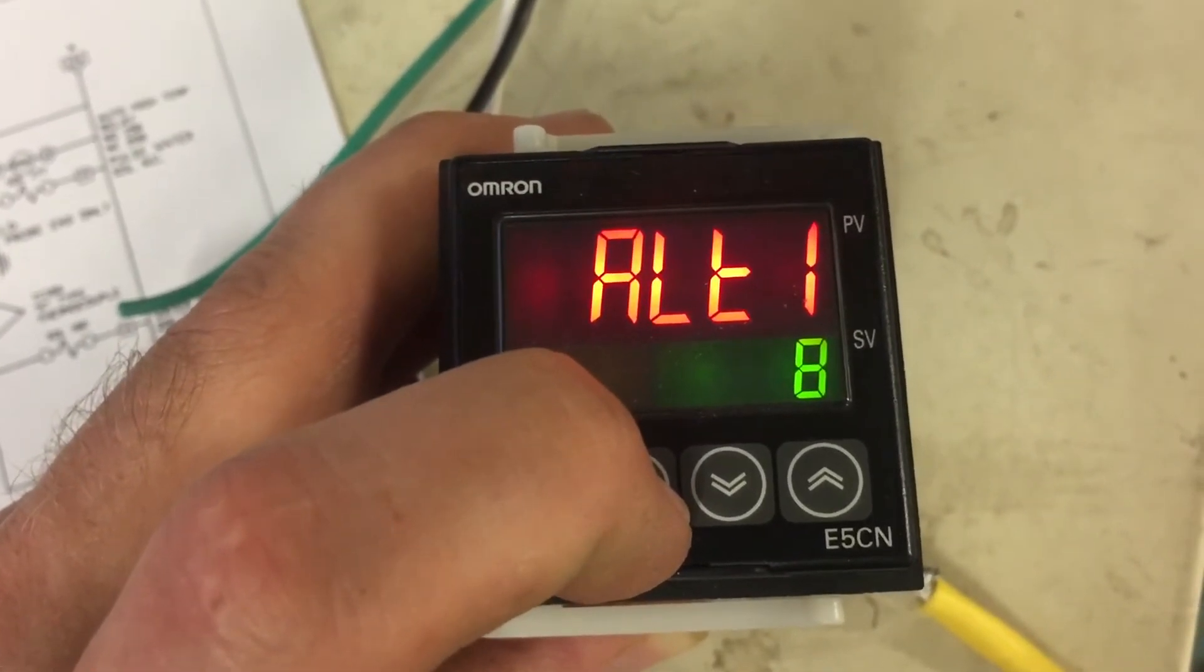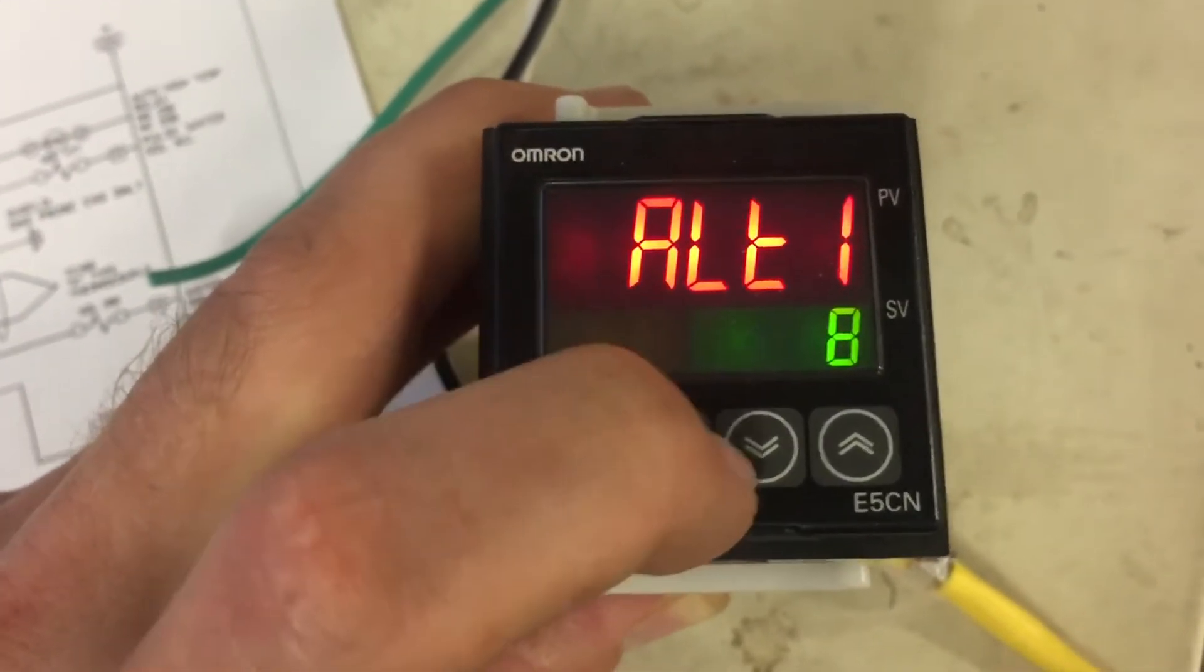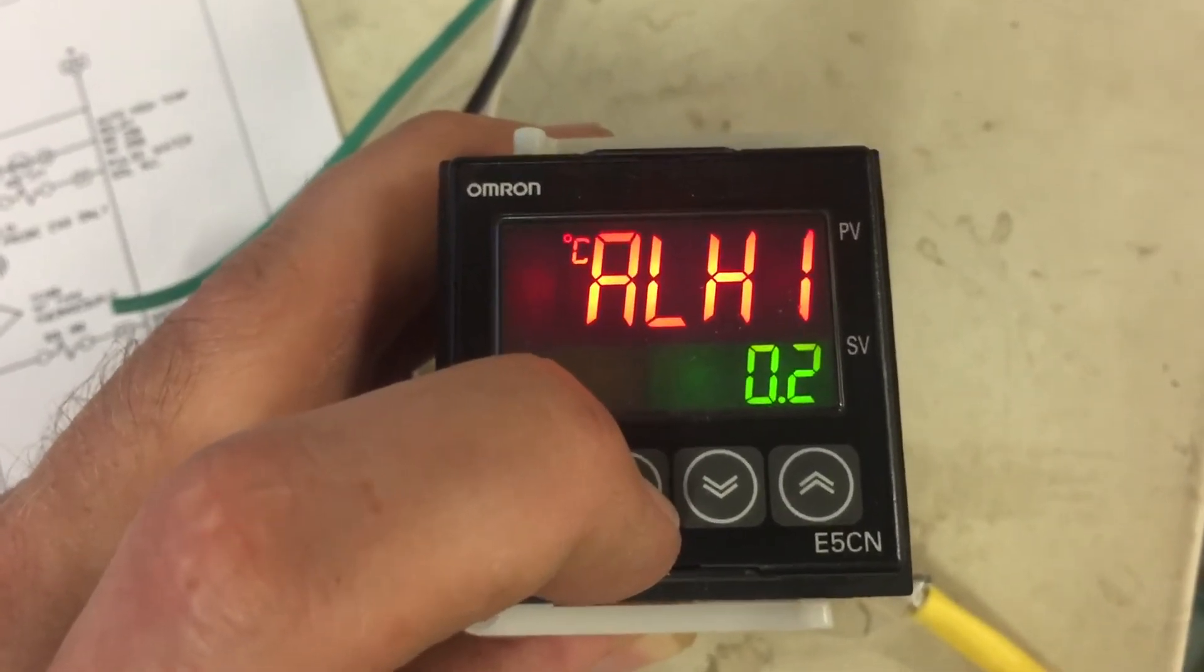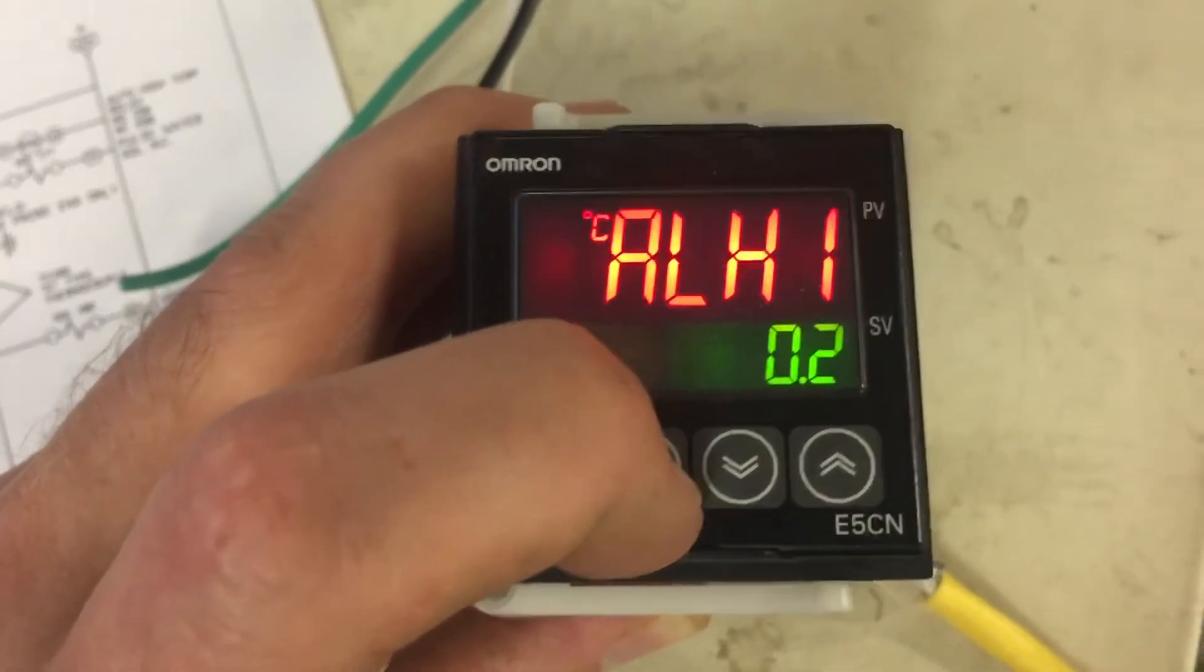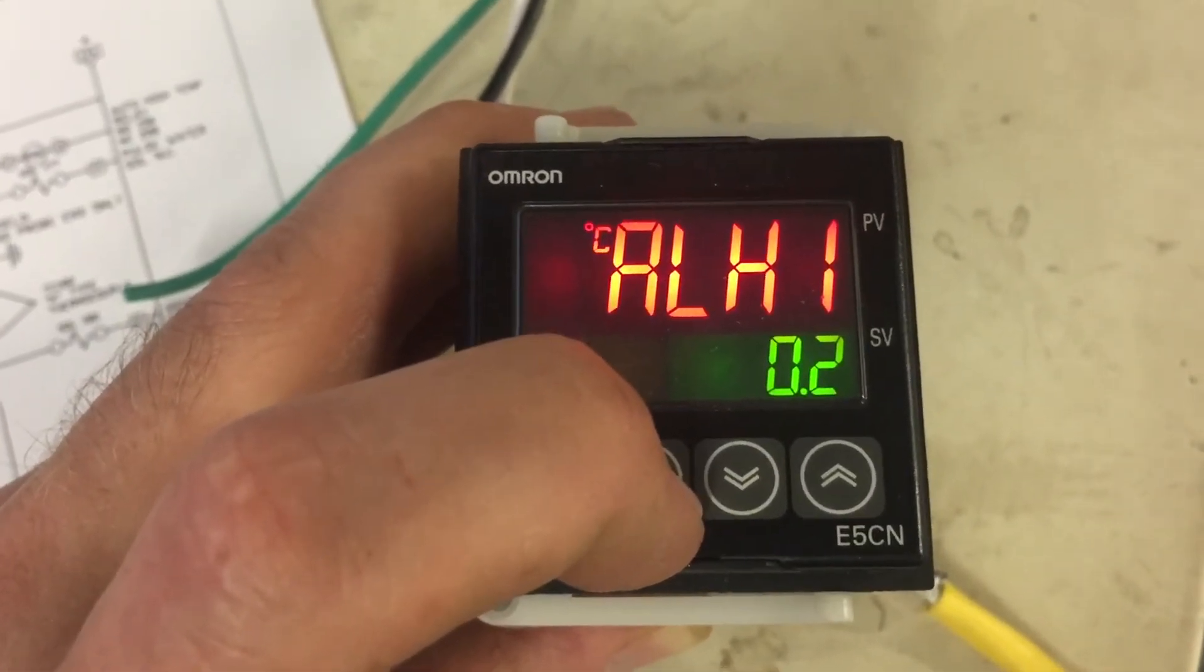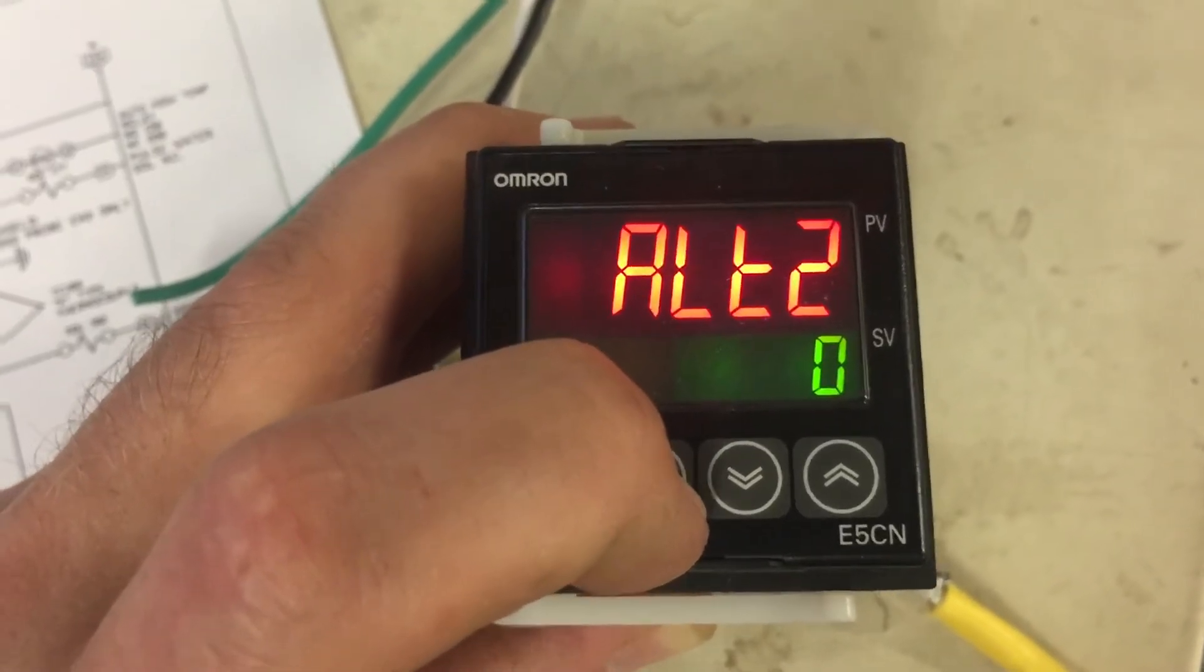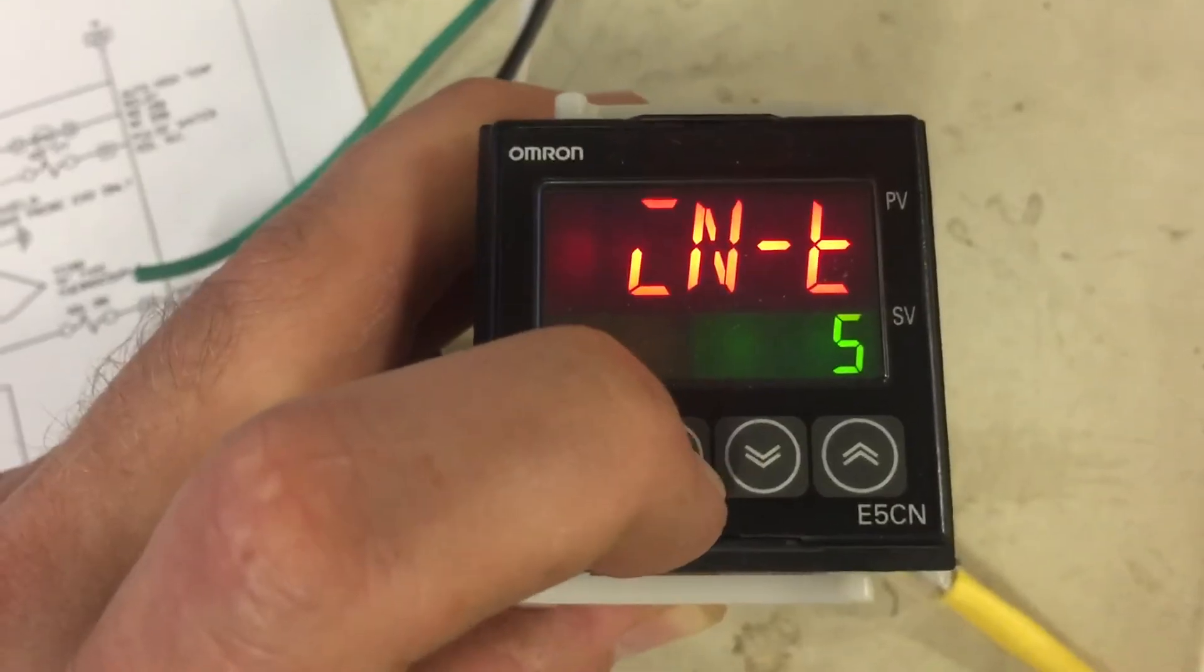ALT1 is going to be 8. This is an absolute value high temperature. And the last value is 0.2 on alarm hysteria 1. So if it goes within that variable that we're going to now set in the next menu within a 0.2 hysteria, then the alarm trips. Alarm type 2, we put this as 0 because we don't use it.